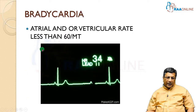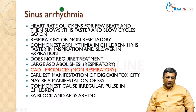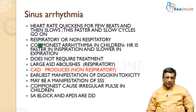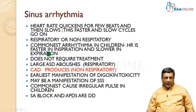Between the bradycardias and tachycardias, we have an arrhythmia called sinus arrhythmia, where the heart rate quickens and slows down spontaneously, whether it is related to respiration or not. It is called respiratory sinus arrhythmia or non-respiratory sinus arrhythmia. In respiratory sinus arrhythmia, the faster component of the heart rate happens during inspiration and the slower component happens during expiration.